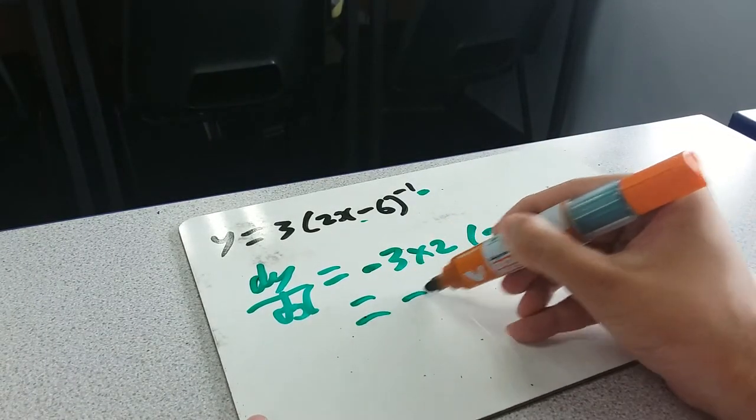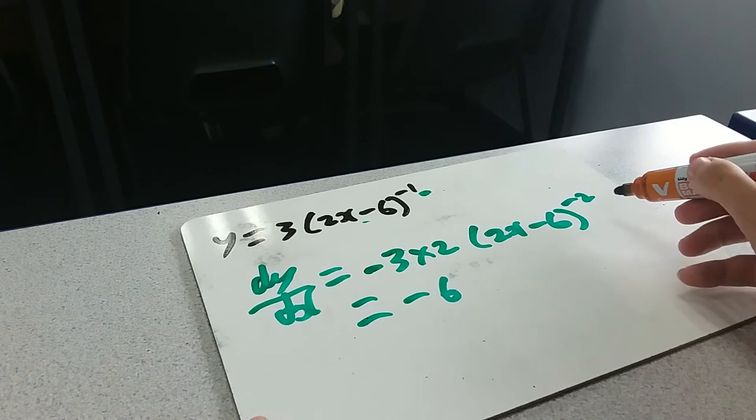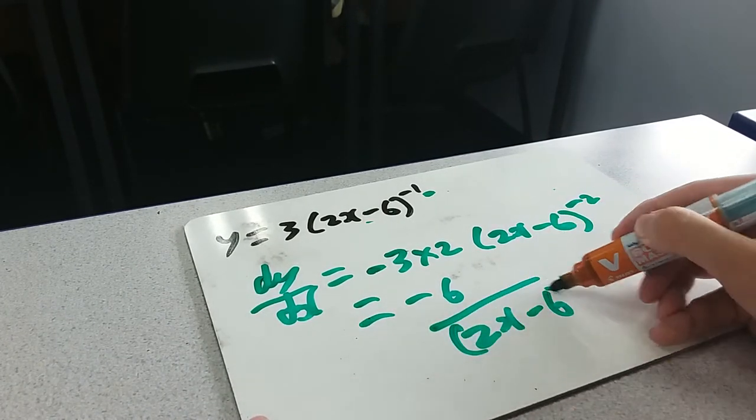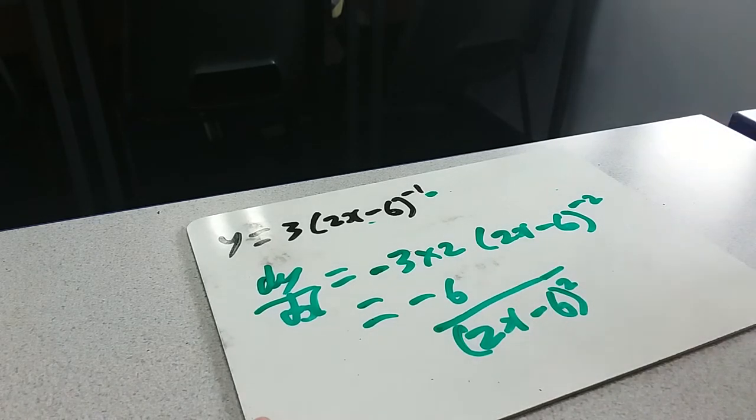Neatening it up a bit, that's minus 6 over 2x minus 6 all squared. Just by the definition of a negative power up there. Done.